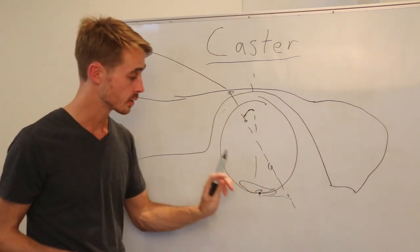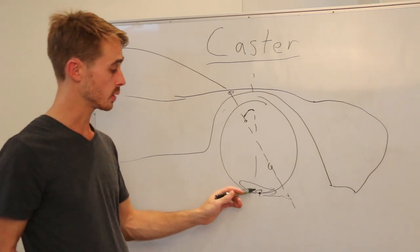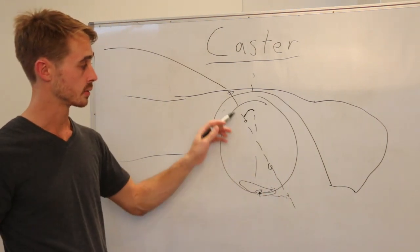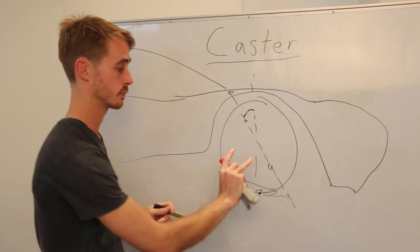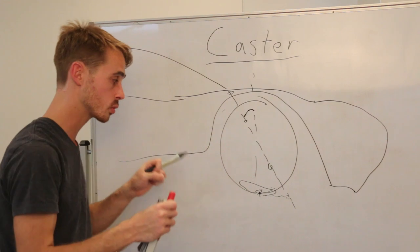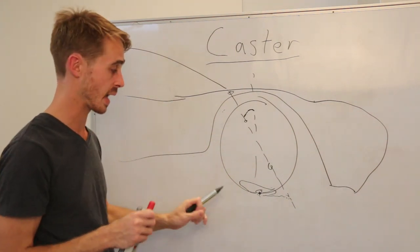The distance from here to here, the mechanical trail will produce a moment arm or a torque around this axis here. So we'll have a twisting force turning the tyre in. So as you turn in, the distance from here to here will cause that steering wheel to give you force feedback.